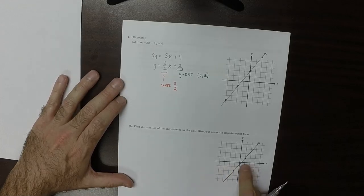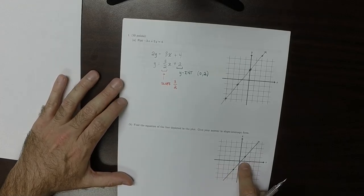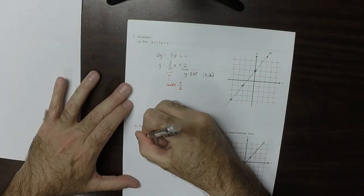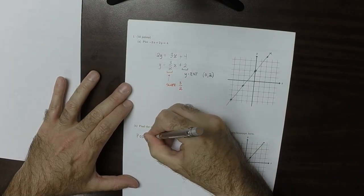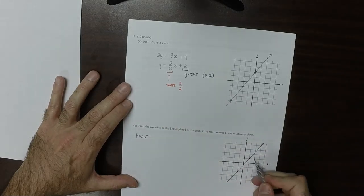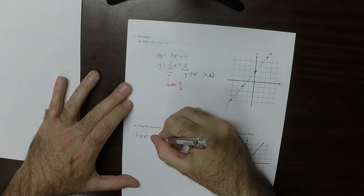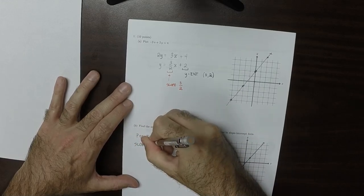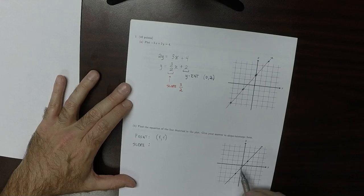Now find the equation of the depicted plot. So a point that is on the line is either one of these that were marked out for you, so I'll use the 0, 1, 1.